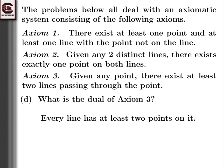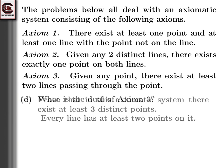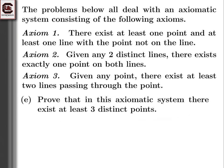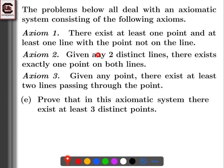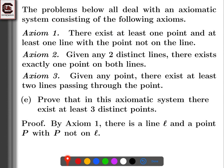That finishes part D. Now we want to prove that in this axiomatic system there exists at least three distinct points. We can use how we began our model construction. Axioms two and three don't assert existence on their own, so we need to start with axiom one. By axiom one, there is a line L and a point P with P not on L. That comes directly from axiom one. We can't use axiom two yet since we don't have two distinct lines, so axiom three is really our next step.